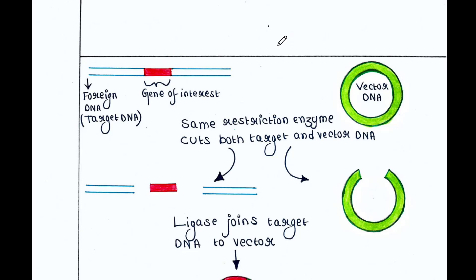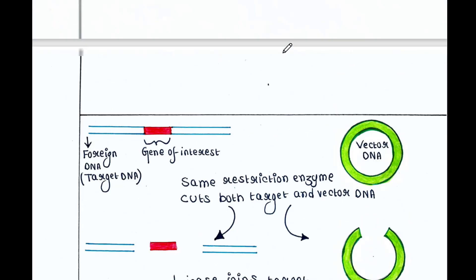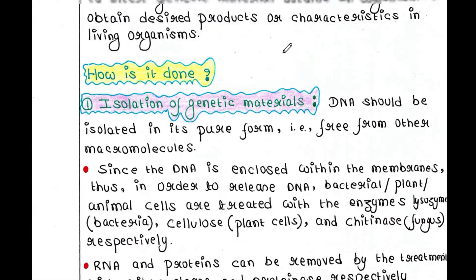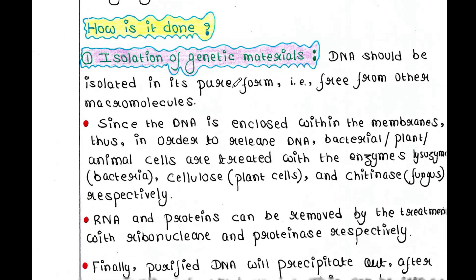You can put this gene in an organism — in a bacteria, in a plant or in an animal — to express that protein in that particular organism. Now let's check how it is done. How can we perform recombinant DNA technology? Here we have some steps.